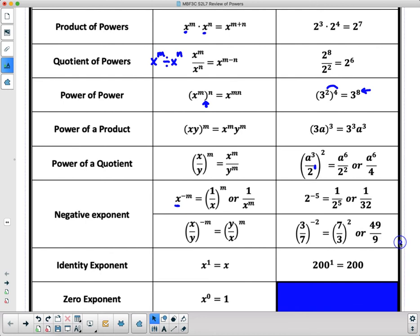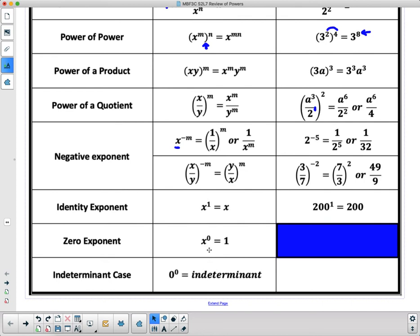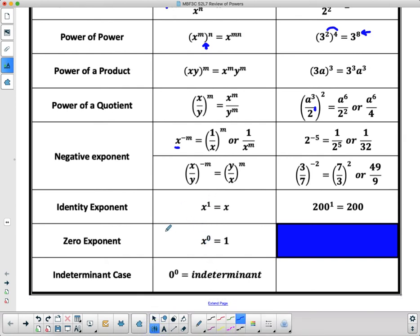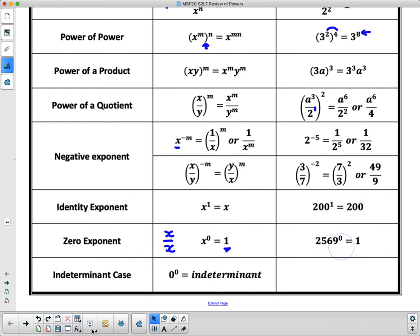Now, remember that the 0 exponent, when we talked about it before, the 0 exponent means that something has been divided by itself. So, basically, x to the 0 means that I have an x divided by an x. And when I divide x by x, I get 1. And it doesn't matter what x is. x could be 10 or 100 or 1,000. Whenever I divide something by itself, my answer is always 1. So, numerically, it looks like this. And I just picked some random number here. 2,569 to the exponent 0 equals 1.